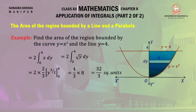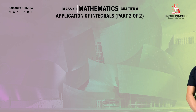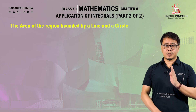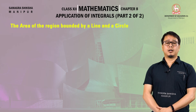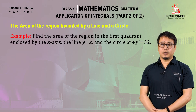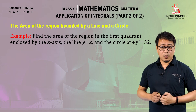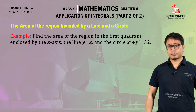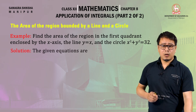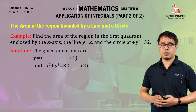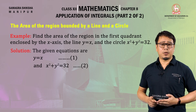Next, the area of the region bounded by a line and a circle. Example: find the area of the region in the first quadrant enclosed by the x-axis, the line y equal to x, and the circle x square plus y square equal to 32. The given equations are y equal to x and the circle x square plus y square equal to 32, which is a standard circle centered at the origin with radius root over 32.